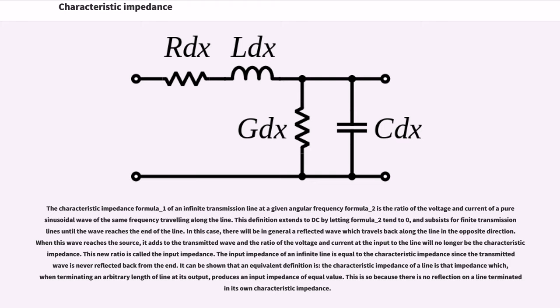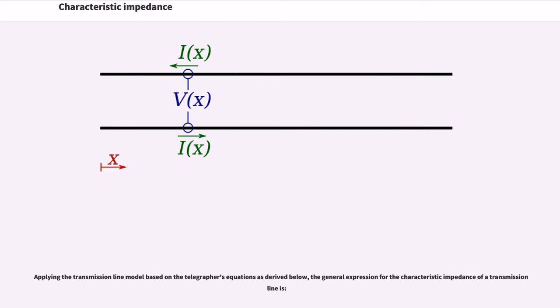The input impedance of an infinite line is equal to the characteristic impedance since the transmitted wave is never reflected back from the end. It can be shown that an equivalent definition is: the characteristic impedance of a line is that impedance which, when terminating an arbitrary length of line at its output, produces an input impedance of equal value. This is so because there is no reflection on a line terminated in its own characteristic impedance. In this case, applying the transmission line model based on the telegrapher's equations as derived below, the general expression for the characteristic impedance of a transmission line is given.